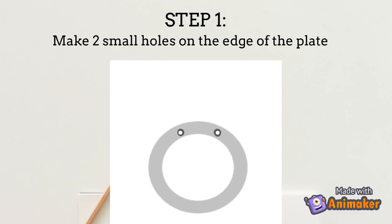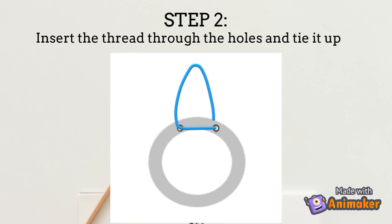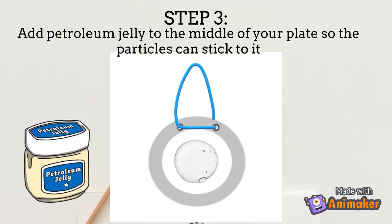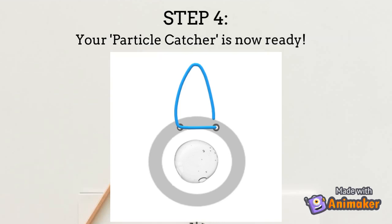Step 1: create two small holes on your plate. Step 2: cut a piece of thread, insert it through the holes on the plate and tie it up. Step 3: take some petroleum jelly and spread it on the middle of the plate. This will help to catch the particles in the air. Your particle catcher plate is now ready. Repeat the process to create your second particle catcher.